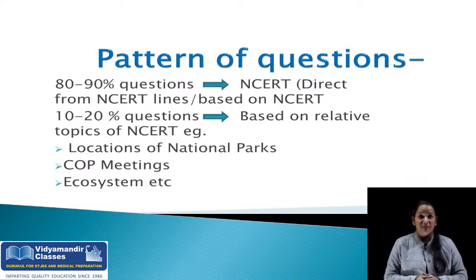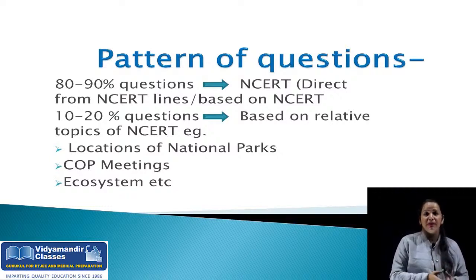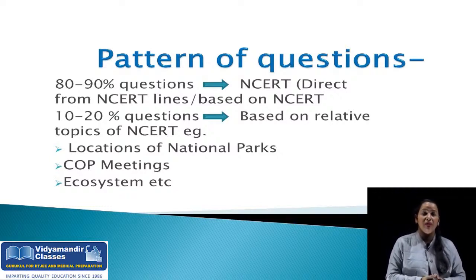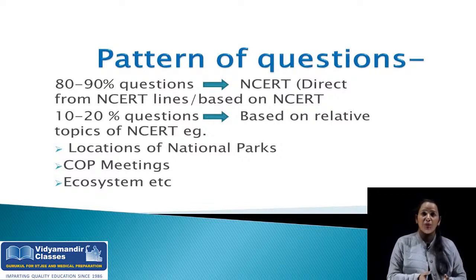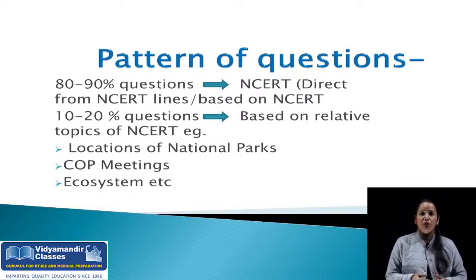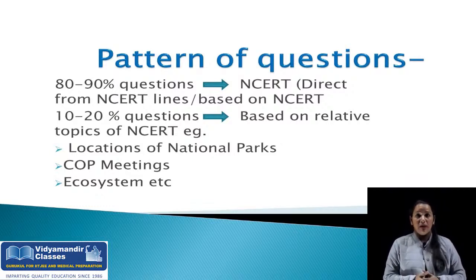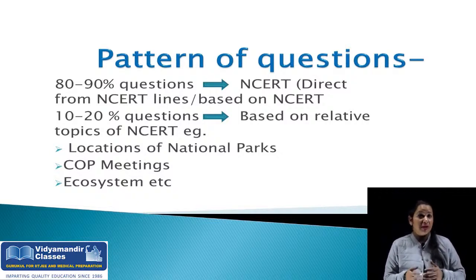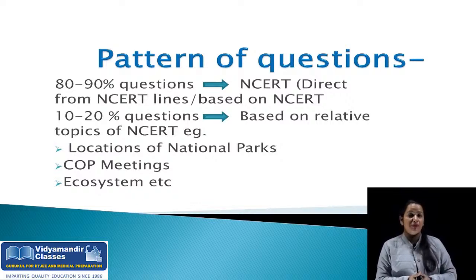How can these be? Looking at the last few years' pattern: locations of national parks — national parks are given in NCERT but apart from those, you should also know the locations of all national parks in India. COP meetings happen every year related to biodiversity — you should know where COP meetings were held, in which year, which ones were held in India. Next is ecosystem — these are topics from which sometimes difficult-level questions are made, meaning these topics will be out of the NCERT, and these 10 to 20 percent questions will be out of the box.